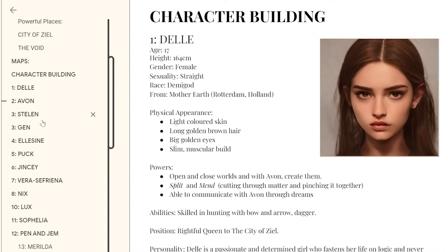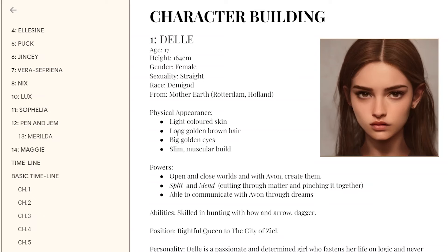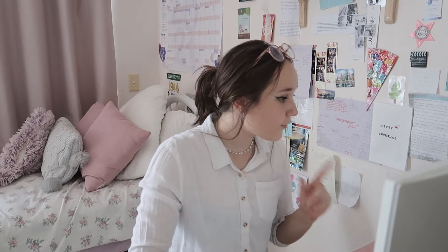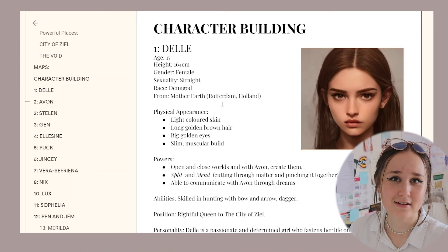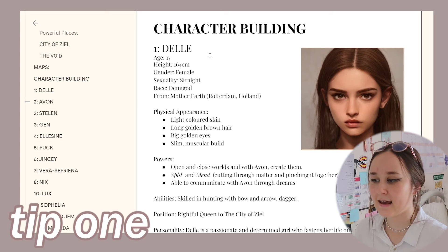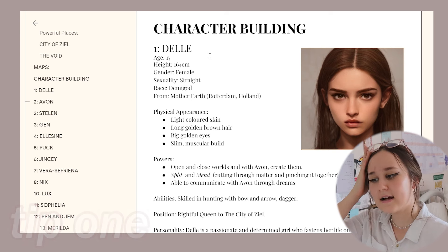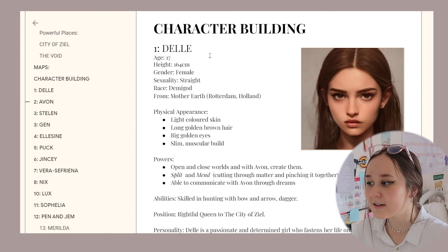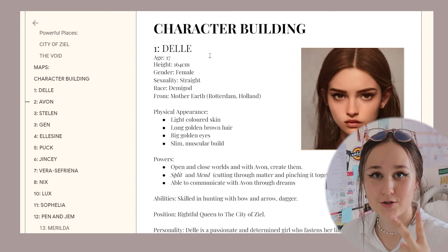This is actually a big planning document, and I actually have headers for each character. I currently have 14 characters in this book, so it is a very big book. I definitely encourage you guys to number your characters and their importance in the book and their involvement. Del is basically the main character, as well as Avon, so they are one and two.